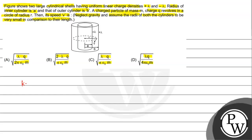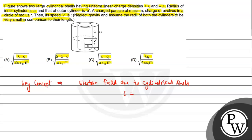The key concept here is the electric field due to a cylindrical geometry. The electric field due to a cylindrical surface is E = λ / (2πε₀r), where lambda is the linear charge density and r is the distance from the center.